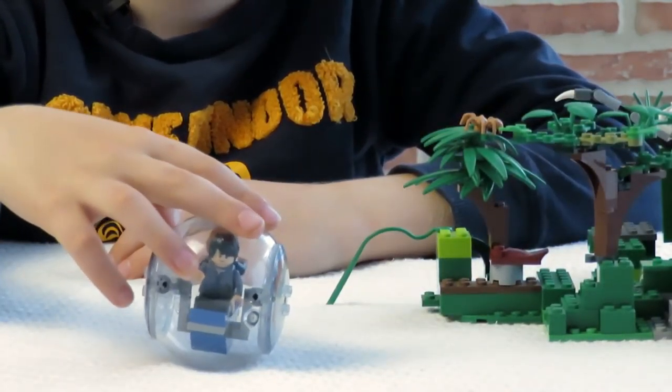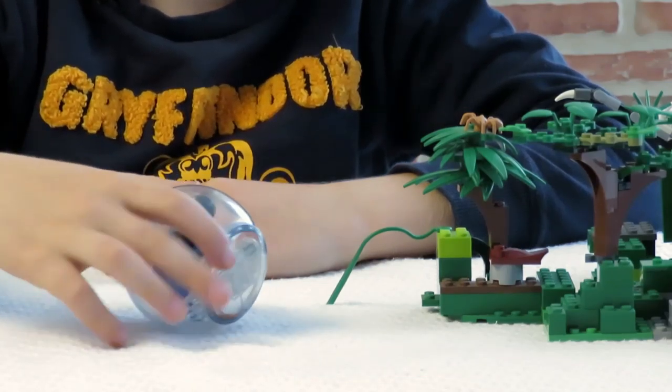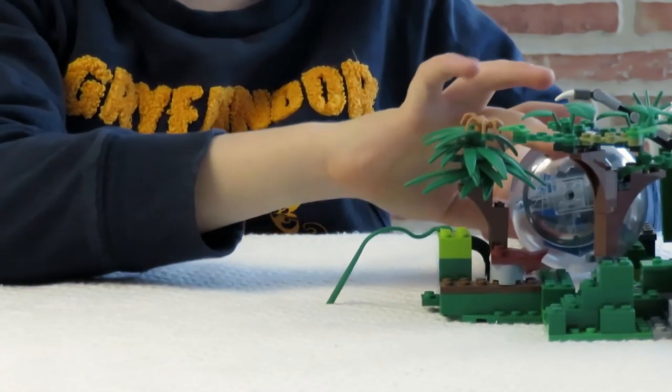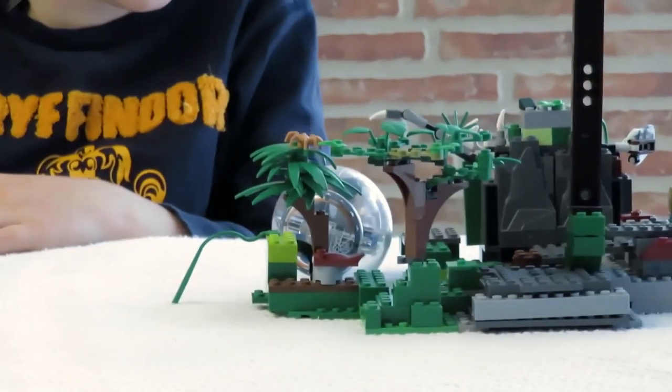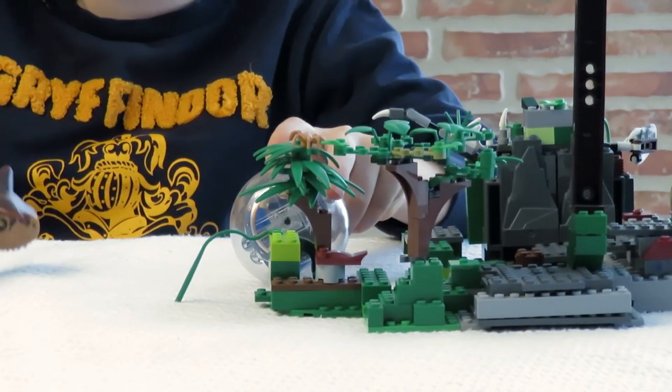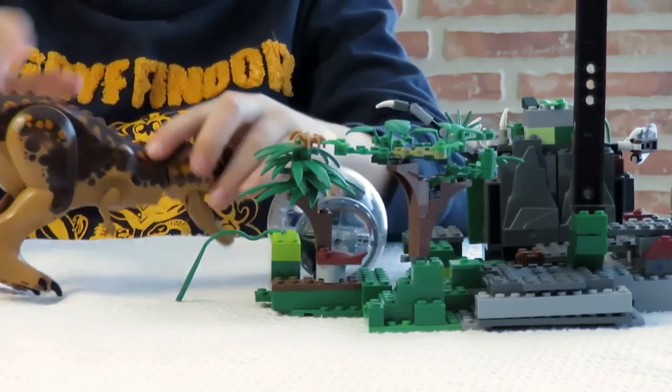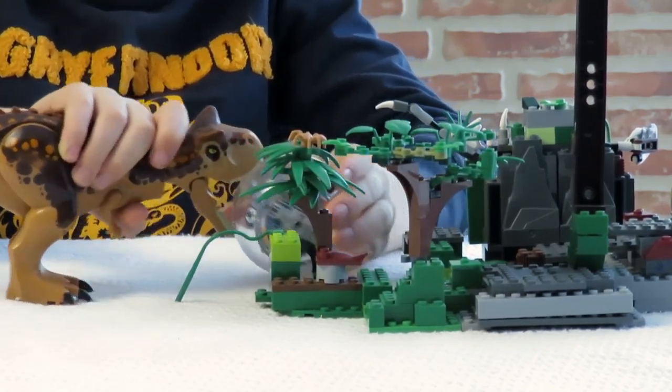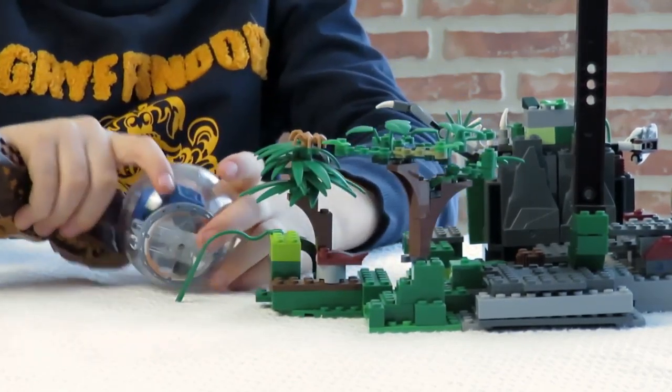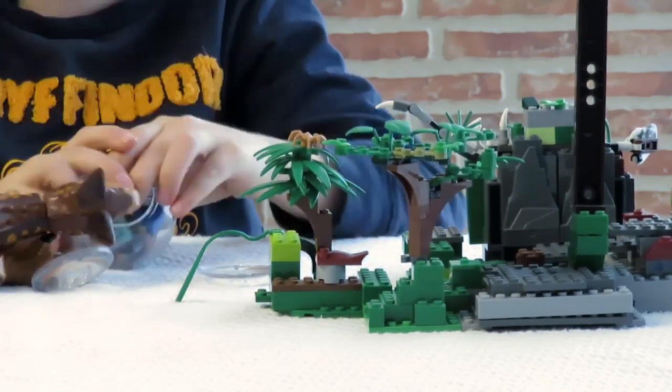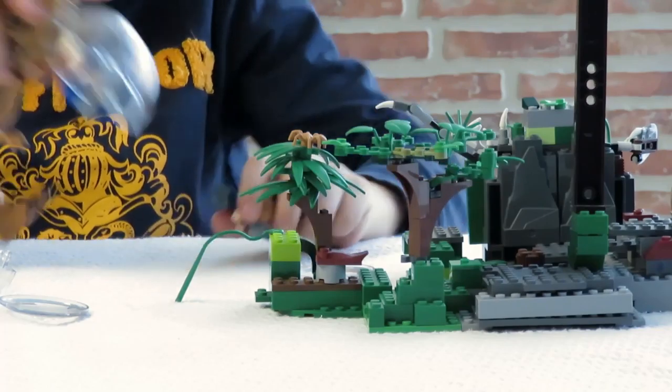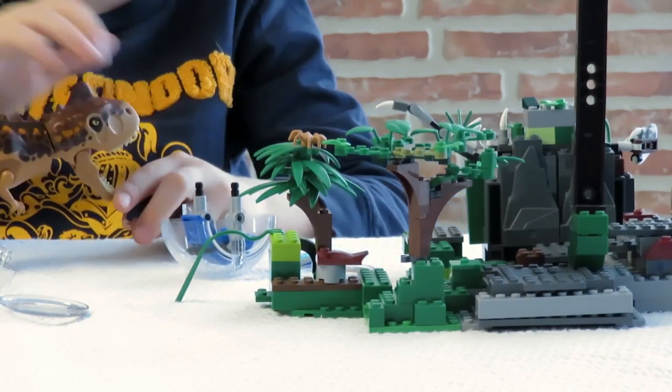Zach, look. It looks like we're in the restricted zone. Look over there, there's a dinosaur. Where? I can't see it. Zach, I'm really scared.